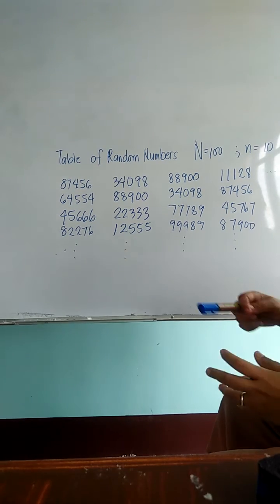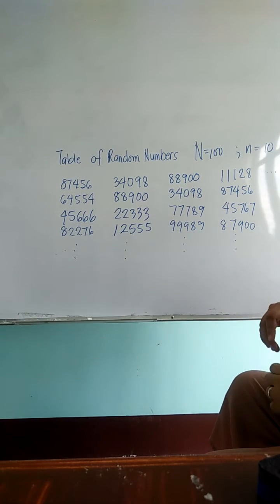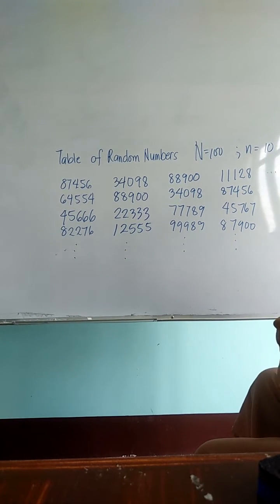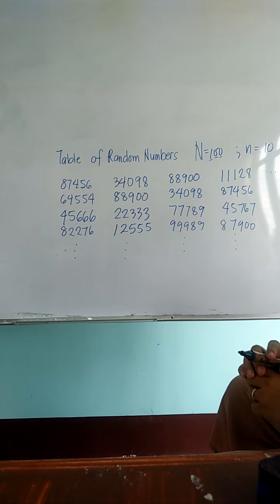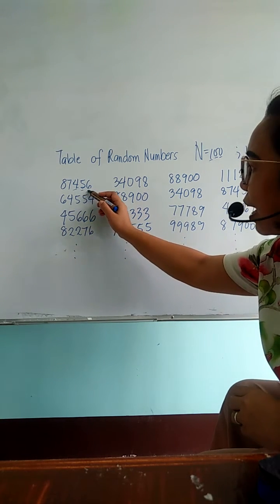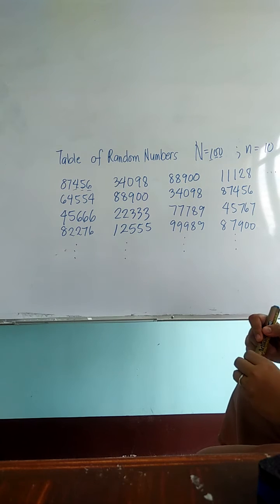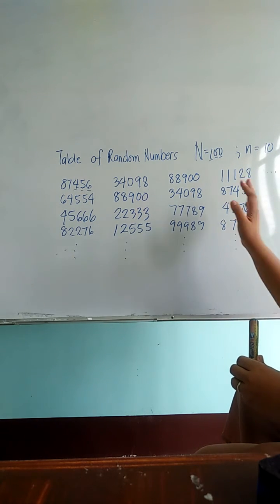Since your population is 100 and it has 3 digits, you are going to use the last 3 digits of the numbers in the table of random numbers.